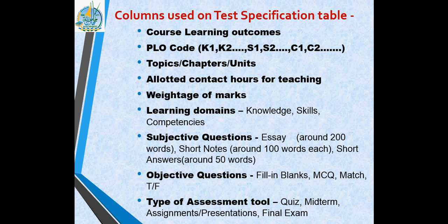The next column covers topics, chapters, or units to be covered during the semester. Then there are allotted contact hours for teaching — each topic is allotted a certain number of hours, such as 3, 6, or 9 hours, depending on the length of the chapter. Weightage of marks indicates how many marks are allotted to each course learning outcome or domain, distributed across objective and subjective questions, quiz, midterm, assignments, and final exam.